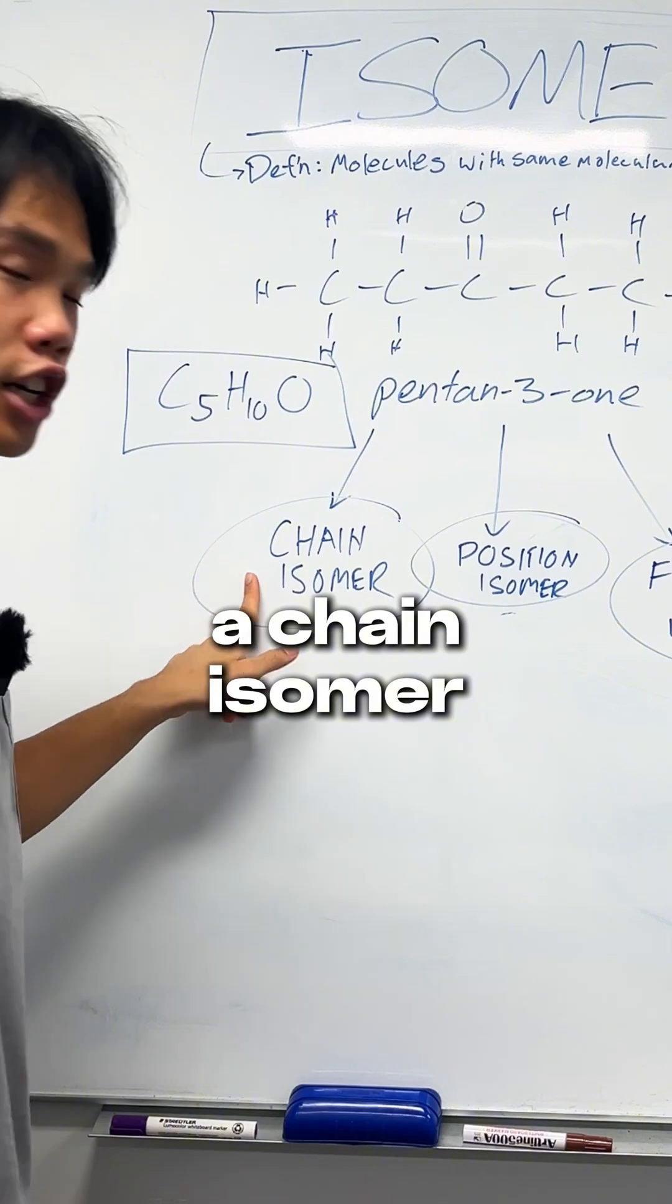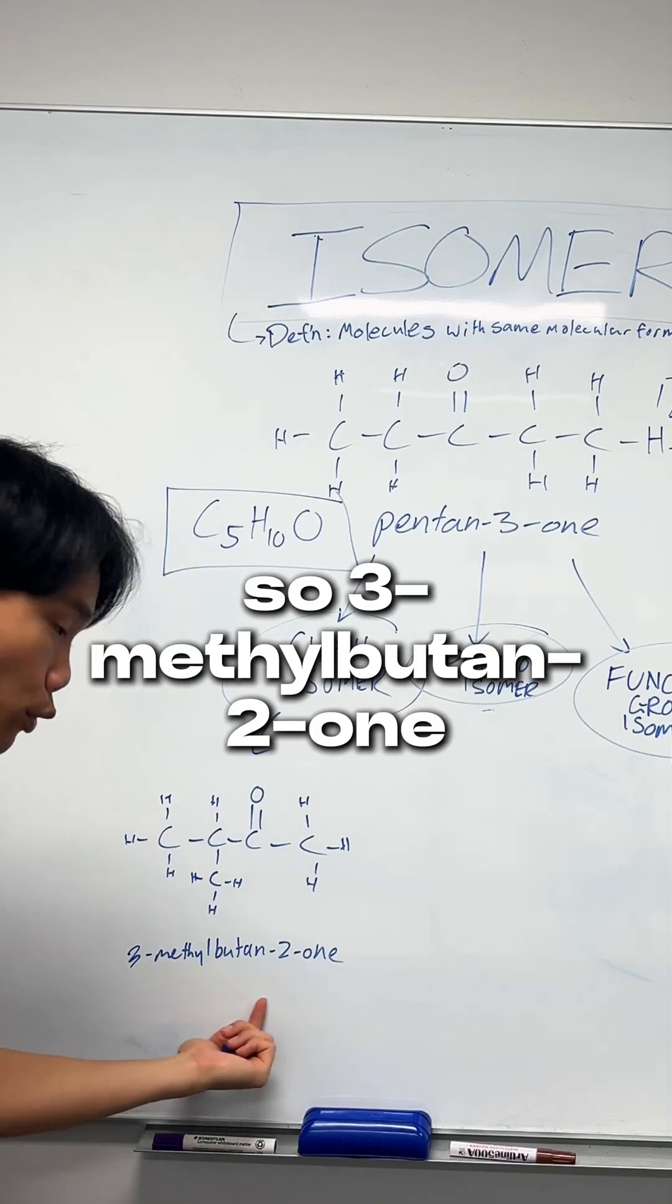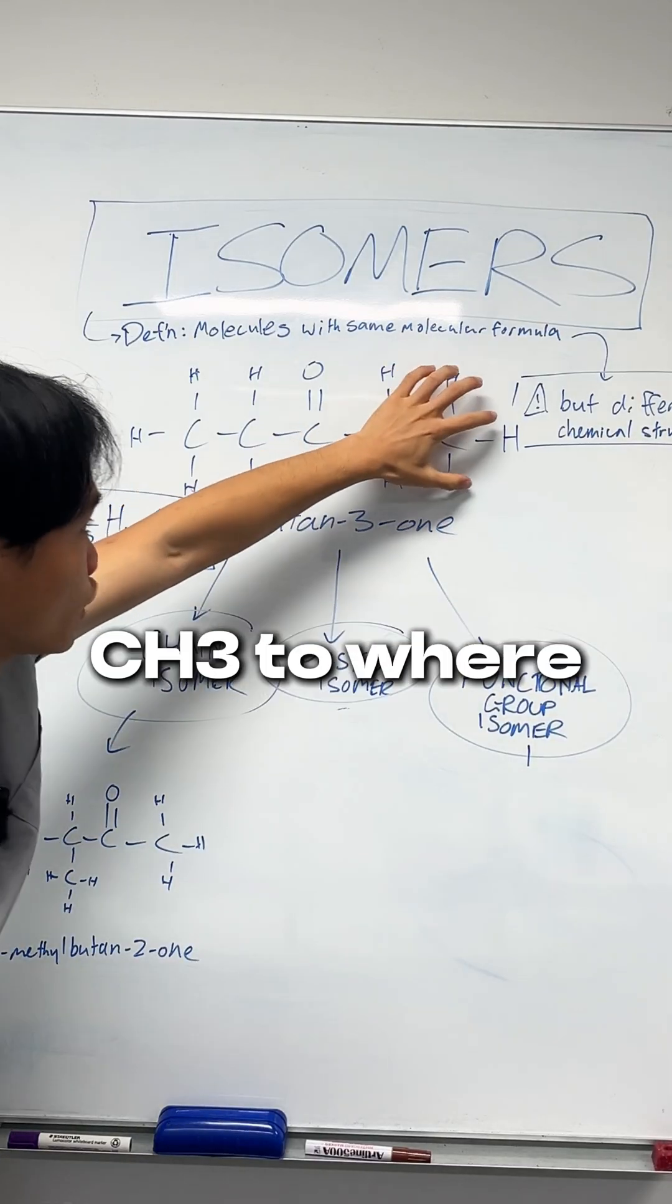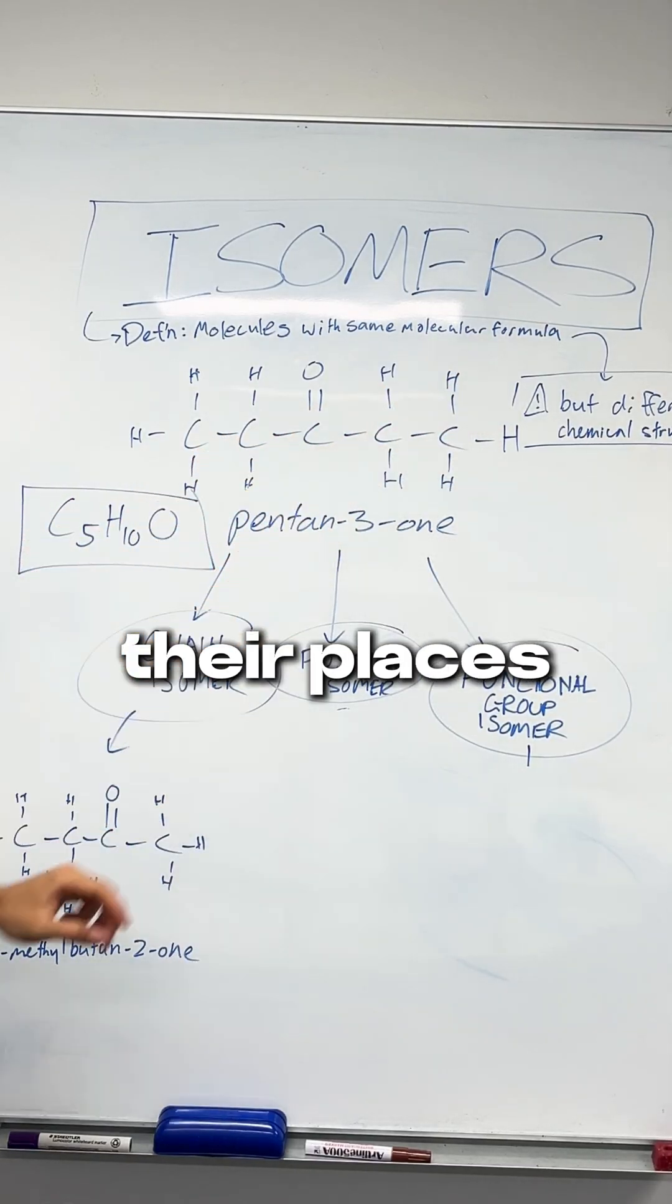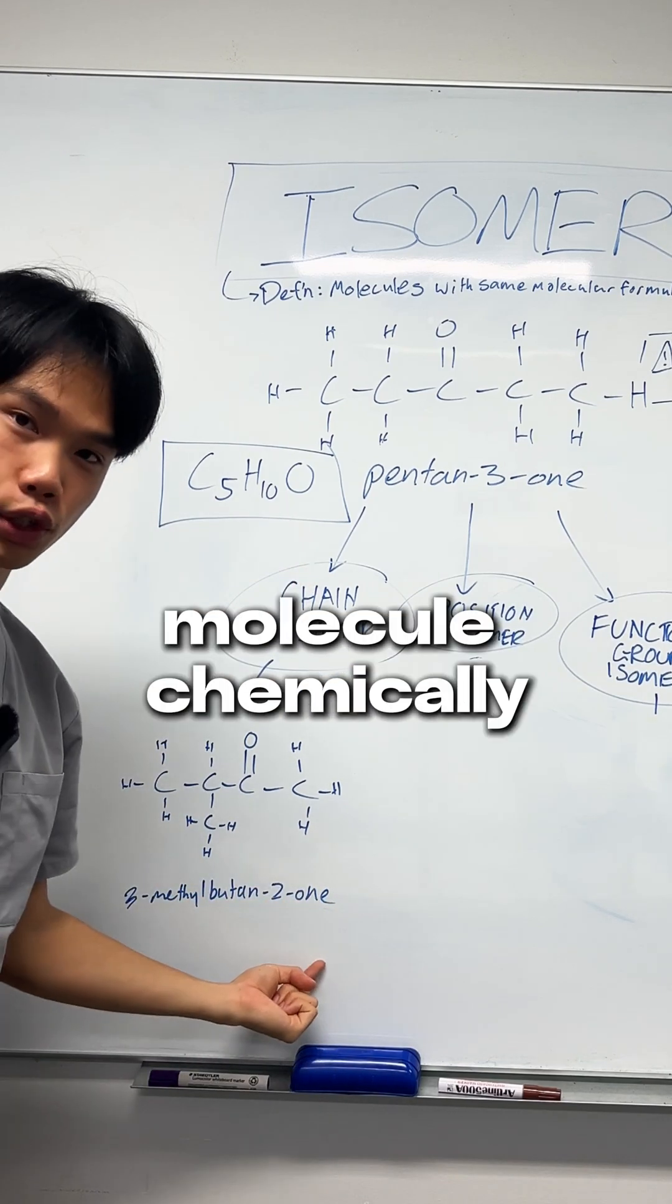The first way is by making a chain isomer, typically done by rearranging the chain to have a different length. So 3-methylbutan-2-one has moved this CH3 to where this H was and swapped their places, meaning you still have the same exact formula C5H10O, but it's a new molecule.